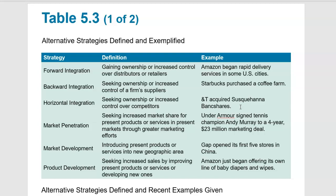Forward integration means gaining ownership and increasing control over distributors and retailers. It's really being a much more diverse company as far as grabbing control of the distribution of the products. Amazon is a good example of this — they have Amazon.com and control distribution of their goods, but they also work with other retailers and control them too to have access to their platform.